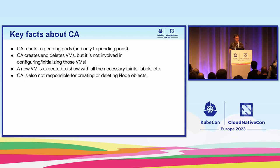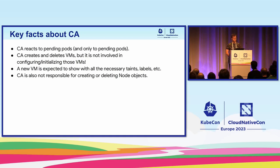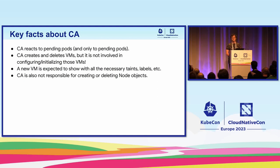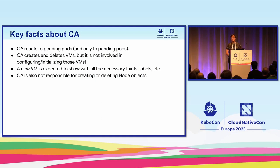Some key facts about how Cluster Autoscaler achieves this: first, Cluster Autoscaler reacts to pending pods — that's what triggers autoscaling. Whenever it sees those pending pods, it calculates how many VMs are needed to run them and goes to the cloud provider to request that those VMs are created. However, it's not really involved in starting those VMs beyond triggering it. It's not initializing the VMs or setting labels or taints on them.